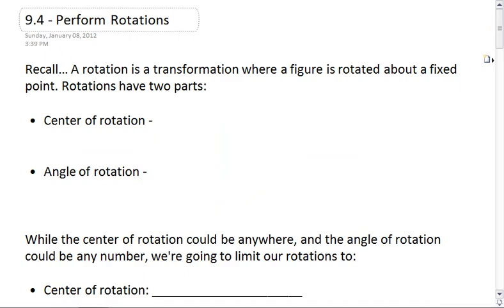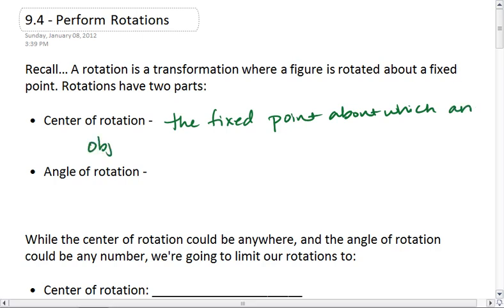So what we see is rotations have two parts. They have a center of rotation, and this is the fixed point about which an object is rotated. And it also has an angle of rotation, and this is how much the object is rotated.